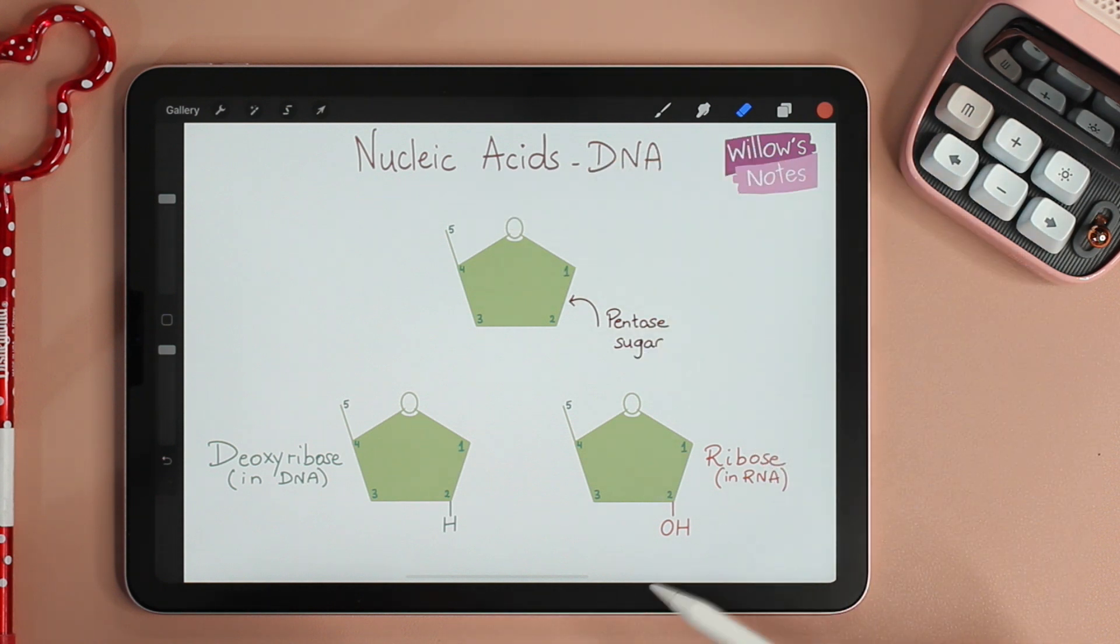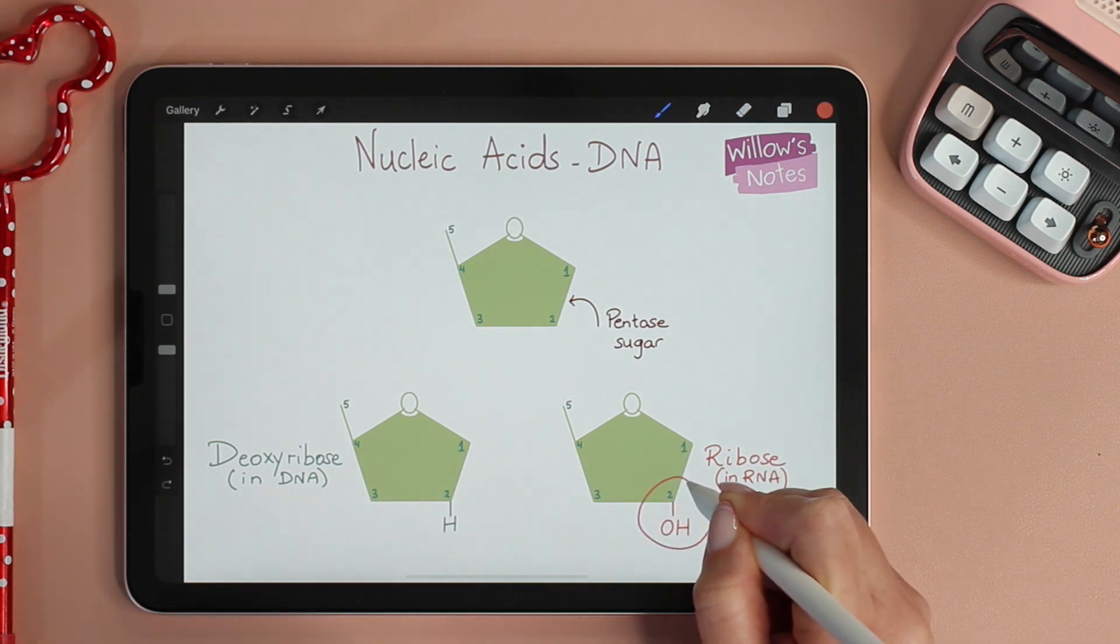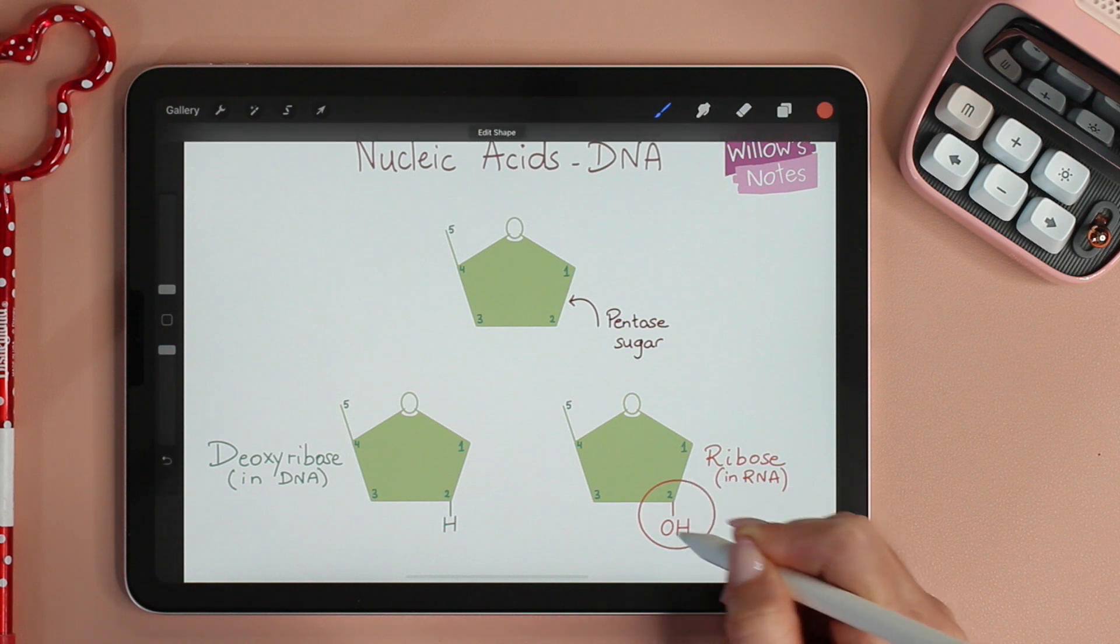The type of sugar in RNA is a ribose, hence the name ribonucleic acid. Look at carbon number 2. It has a hydroxyl group.